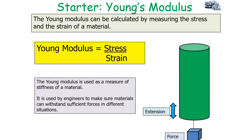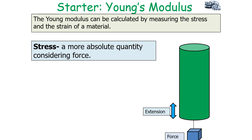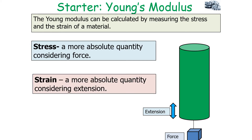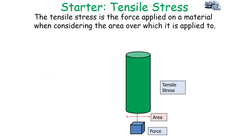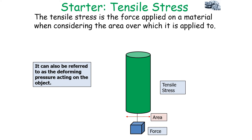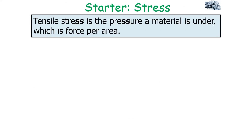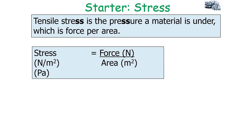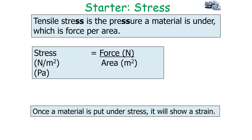Stress is a more absolute quantity which considers the deforming force, while strain considers the extension. Tensile stress is the force applied on a material considering the area over which it is applied — it can also be referred to as the deforming pressure acting on an object. Stress in newtons per metre squared equals force in newtons over area in metres squared, and can also be measured in pascals, because stress is just another version of pressure.